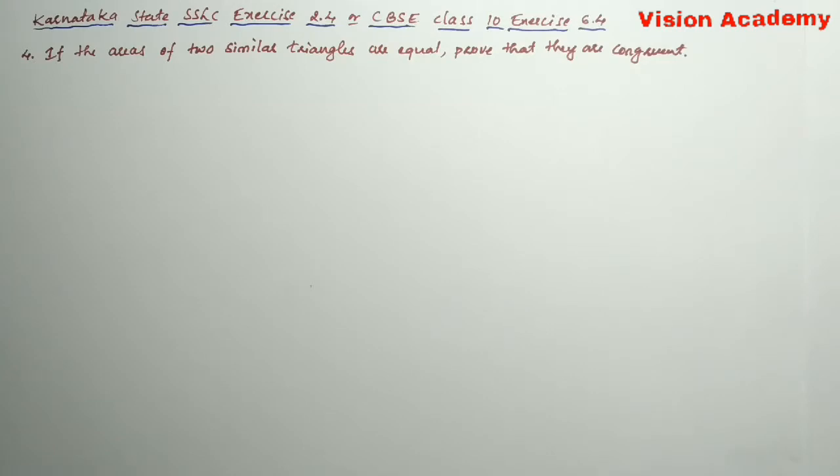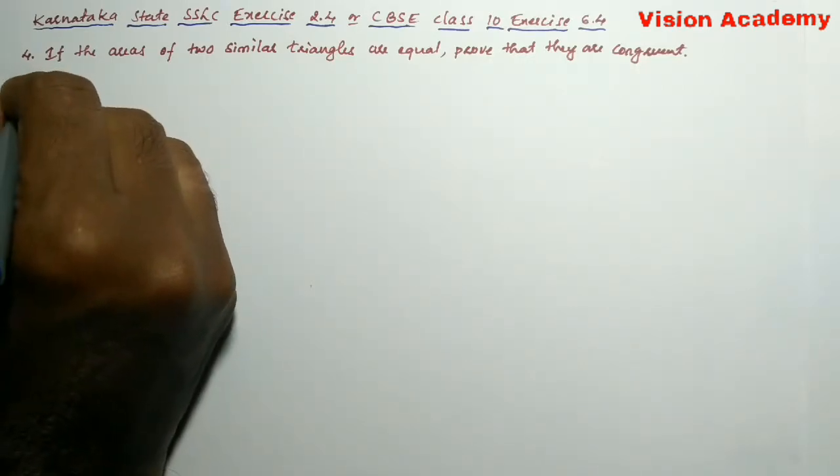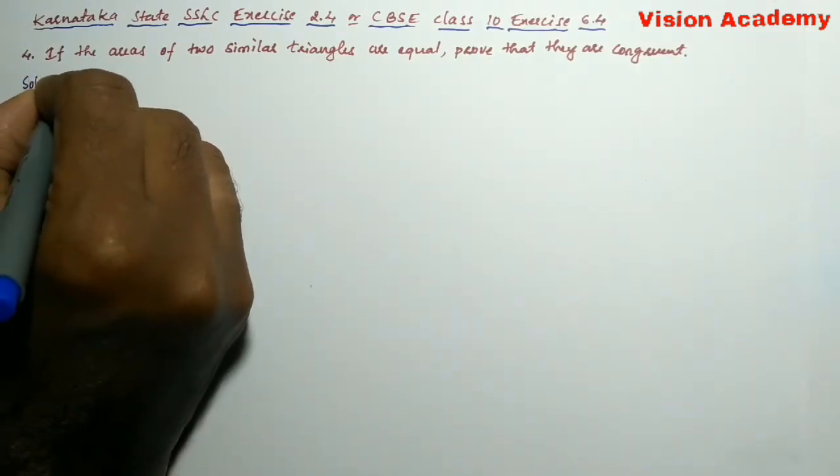If the areas of two similar triangles are equal, prove that they are congruent. Now, let us find the solution for the given problem.